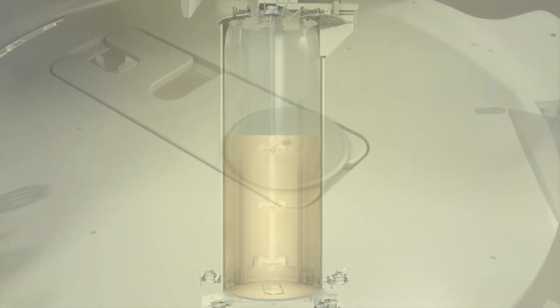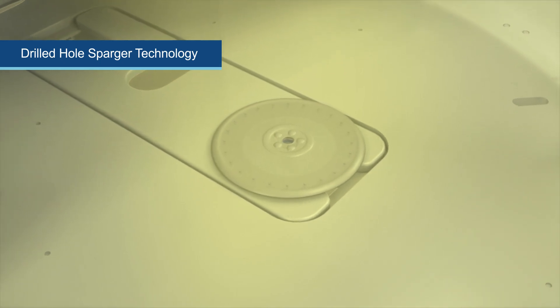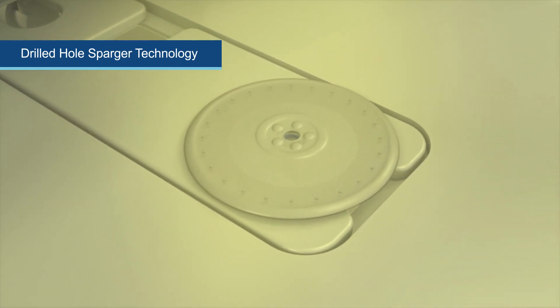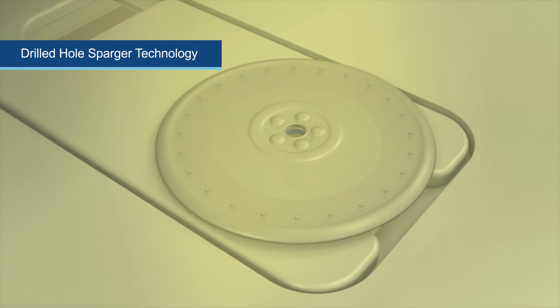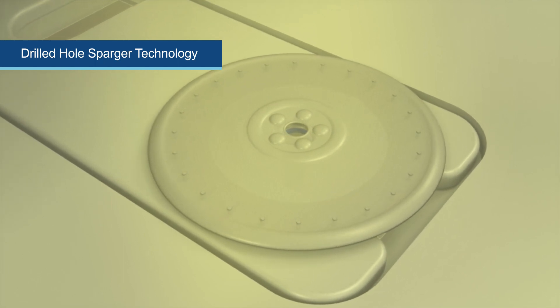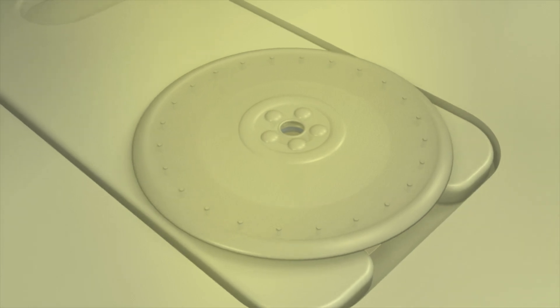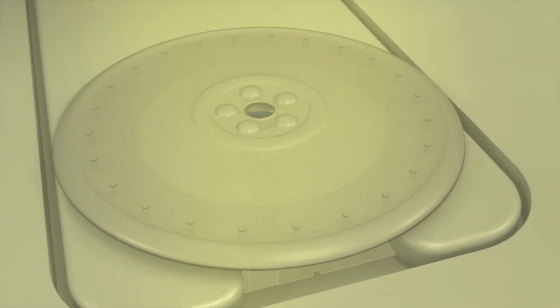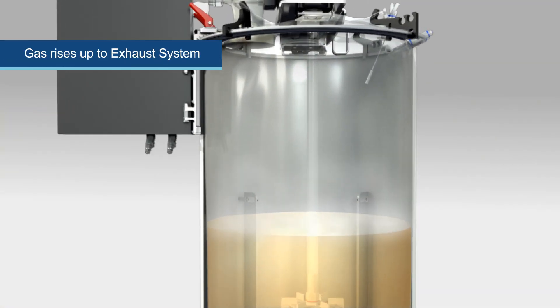The drilled hole sparger technology working with the Rushton impellers and baffles helps meet the high KLA requirements for fermentation. The drilled hole sparger pores are a specific size and quantity tailored for linear scalability to meet your oxygen transfer rate criteria when scaling from 6 to 300 liters.